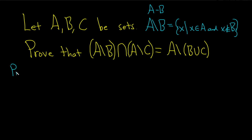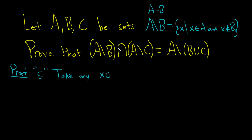To prove two sets are equal, we have to show that they are subsets of each other. Let's start by showing this direction: we're going to show that the set on the left is a subset of the set on the right. So we'll start by taking an element x in the set A minus B intersect A minus C.